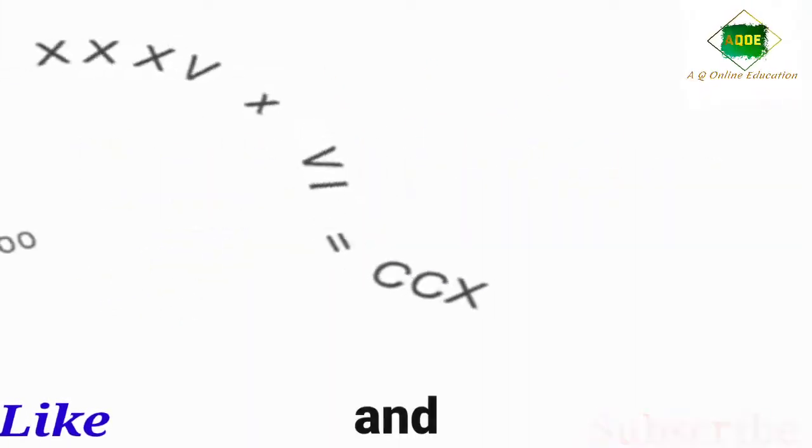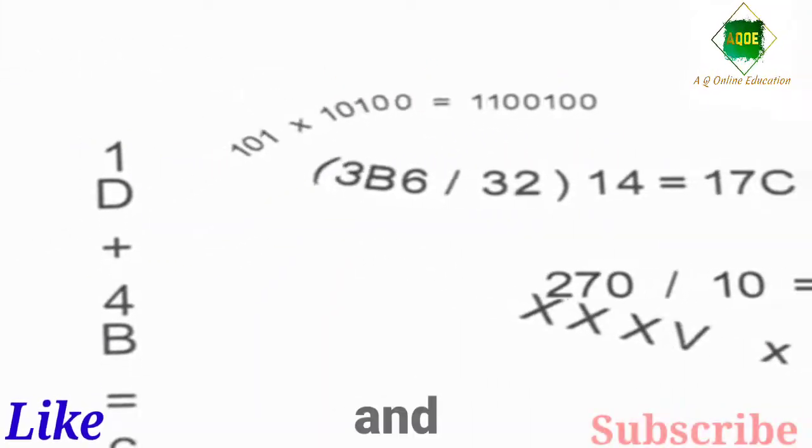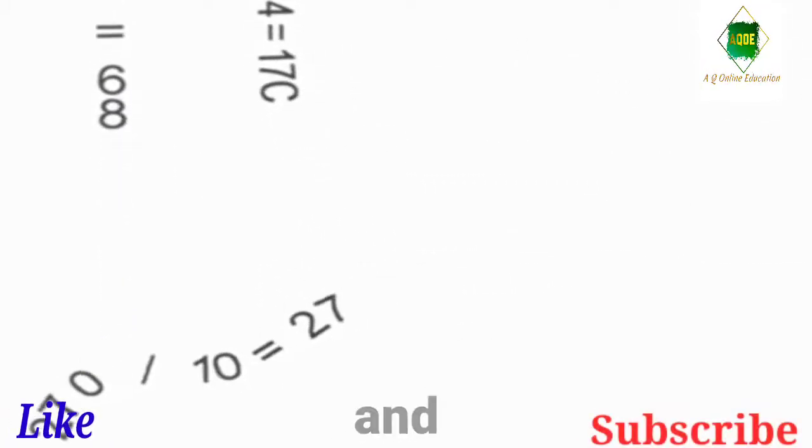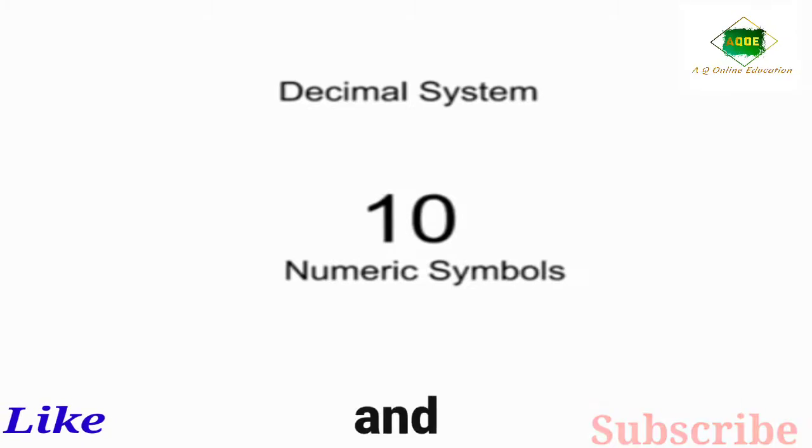Various numbering systems use symbols to refer to a number of items. Our common decimal system uses 10 numeric symbols.